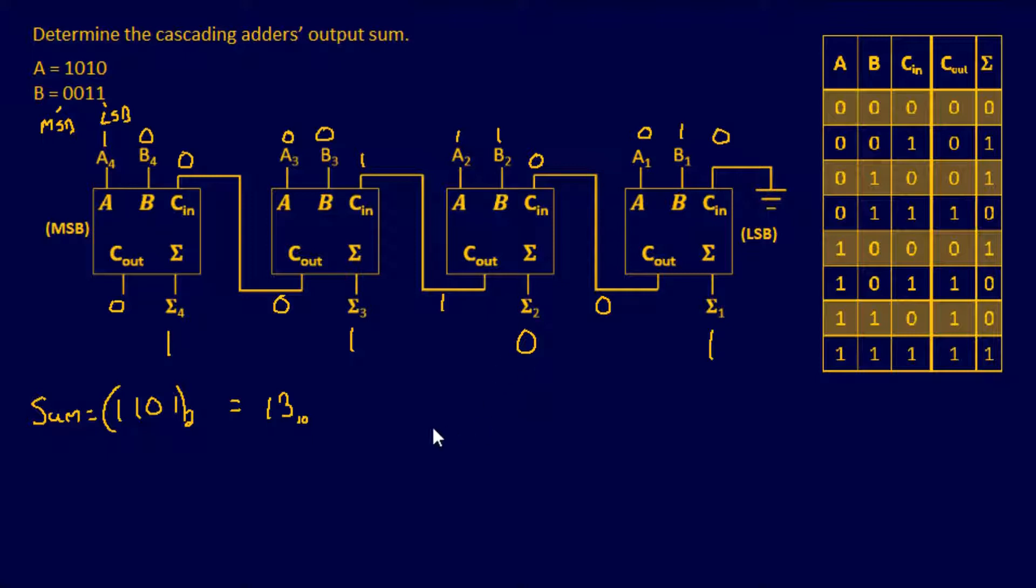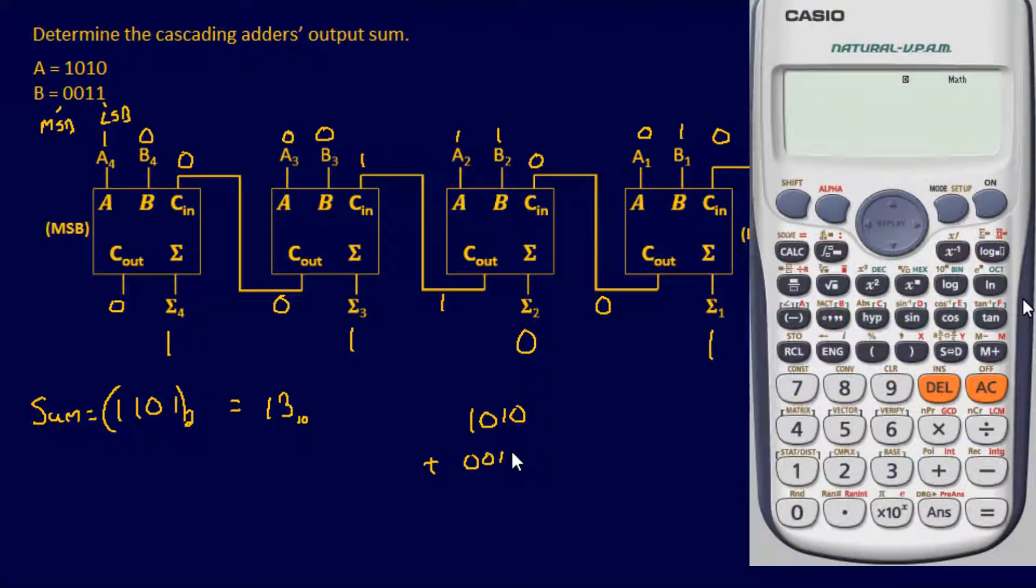And there's a very easy way to check that. You can either do this on your calculator or the old-fashioned way. So if you added this up, it's going to be 1010 plus 0011. And again, I'm going to do it both in binary form, so it's base 2, and I'll do it in decimal form, so it's also going to be base 10.